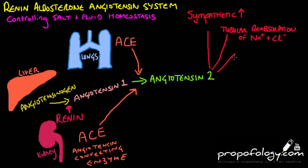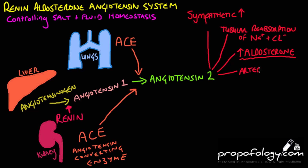It stimulates aldosterone production, which in turn also promotes sodium reabsorption and therefore water retention, improving blood pressure. Angiotensin 2 also produces marked vasoconstriction in arterioles, thus increasing blood pressure too.